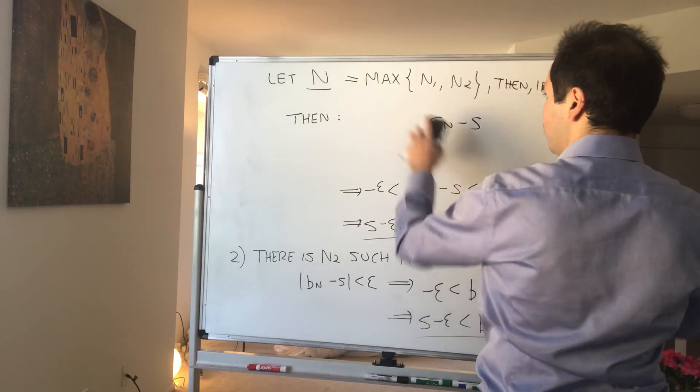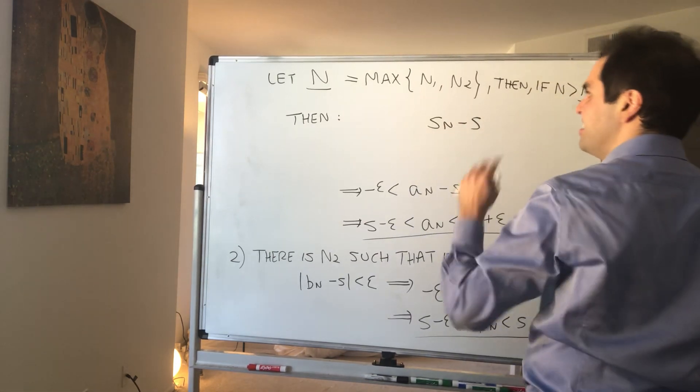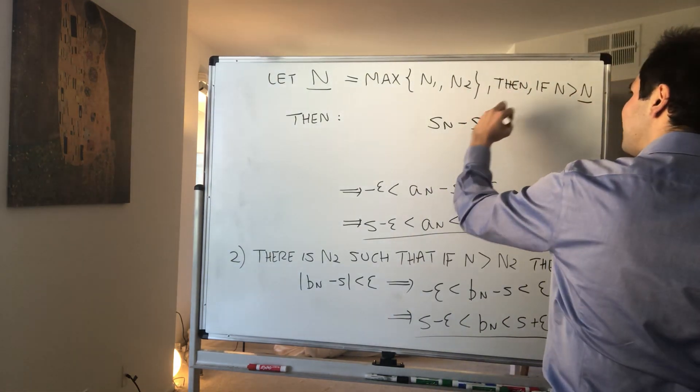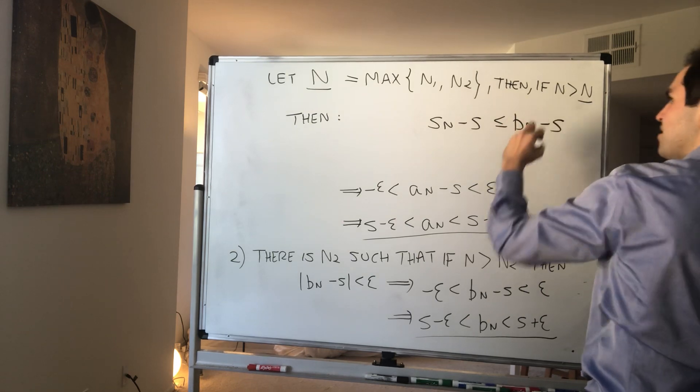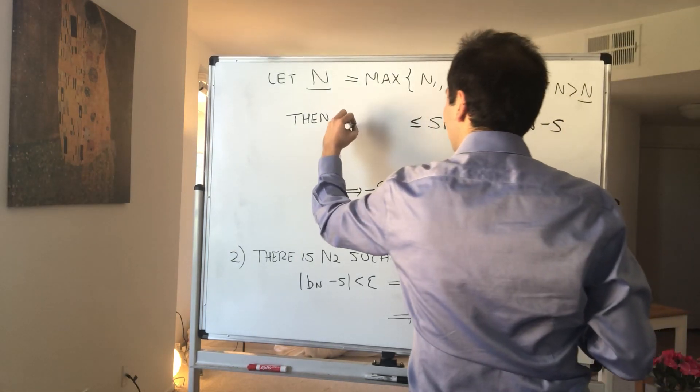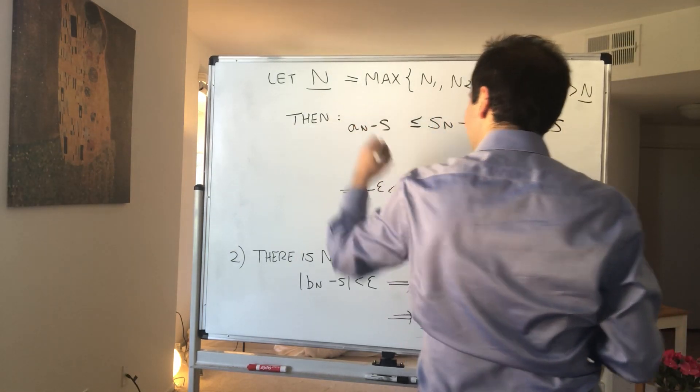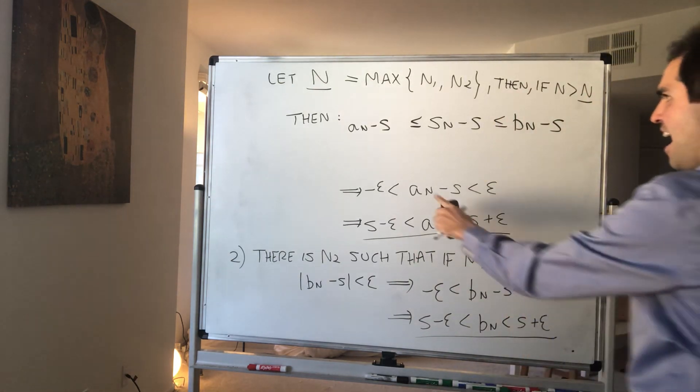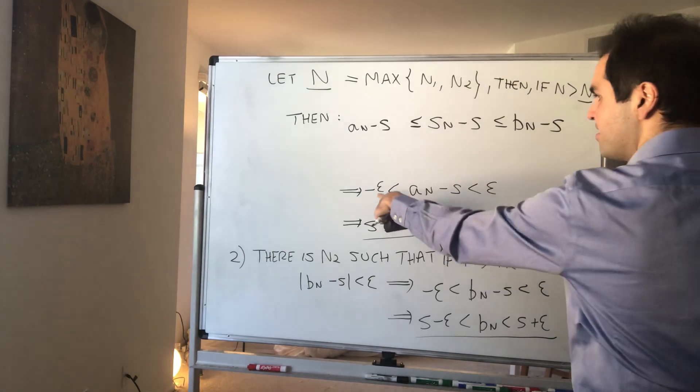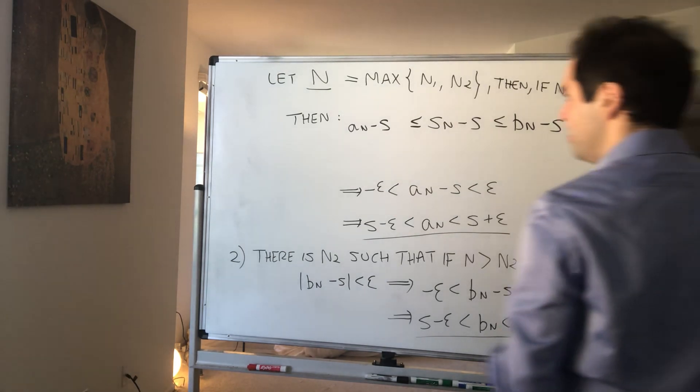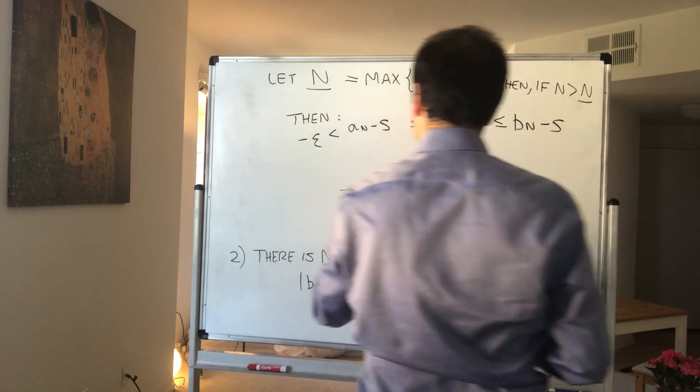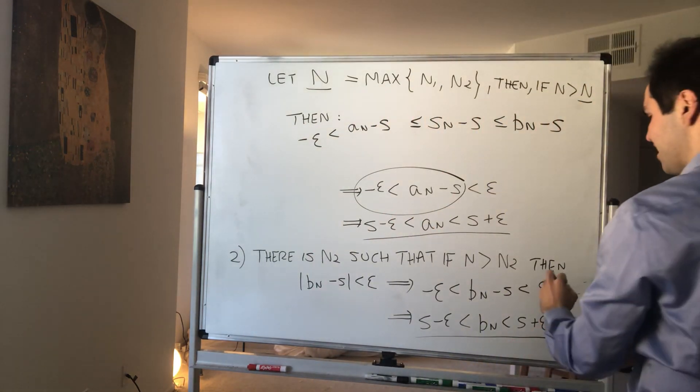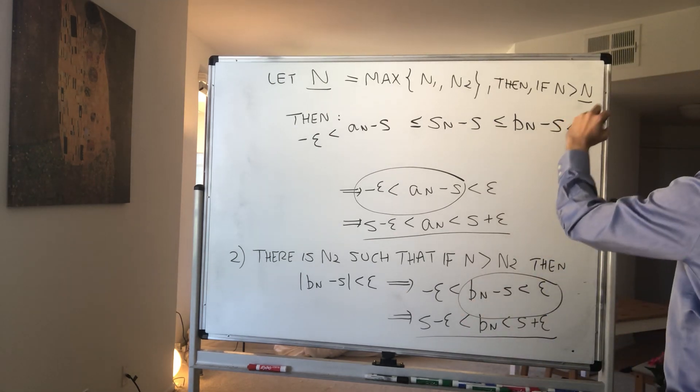On the one hand, since s_n is less than or equal to b_n, this is less than or equal to b_n minus s, and this is greater than or equal to a_n minus s. On the other hand, we know that a_n minus s is bigger than -epsilon by this part. On the other hand, b_n minus s is less than epsilon by this part. So let's combine this.